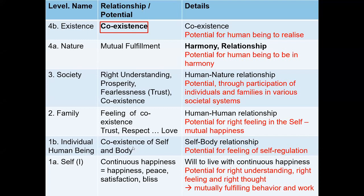We also looked into the coexistence of self and body: the body is my instrument, a material entity; I am the conscious entity — and through that we could explore self-regulation and health. In a state of continuous happiness we have happiness, peace, satisfaction, and bliss. Bliss is when I get the realization of coexistence in existence and on that basis understand the harmony in nature — that is the state of bliss.